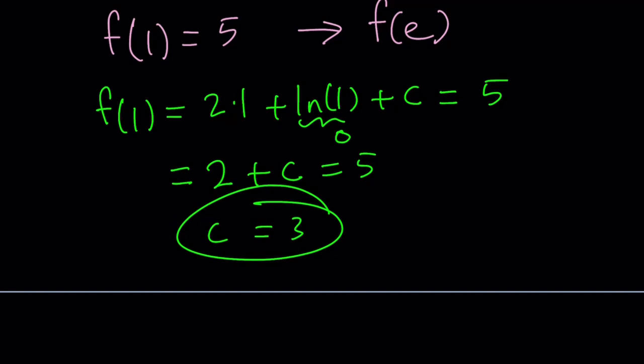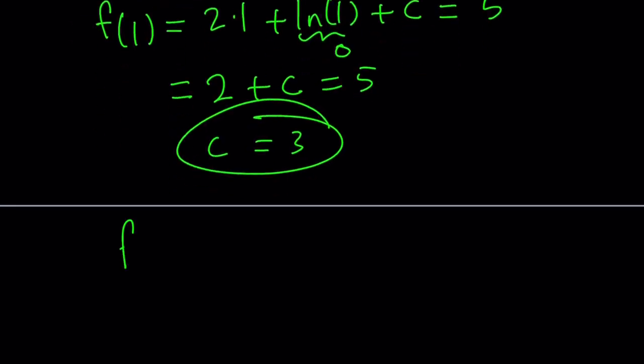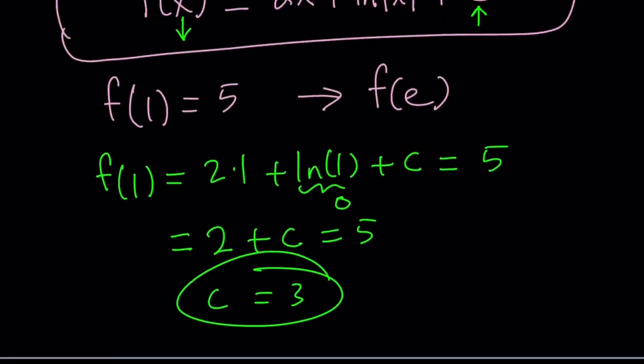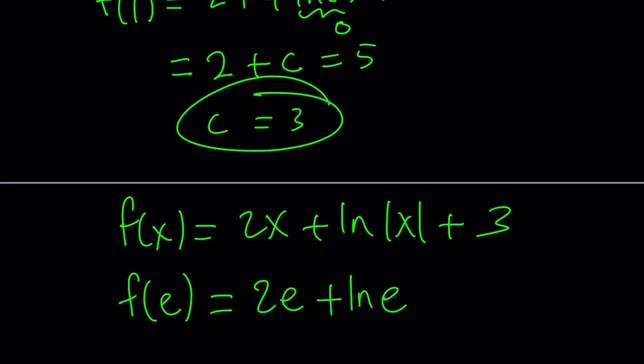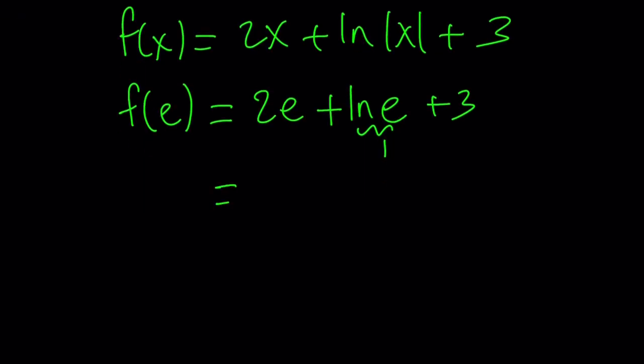Now we got the value of c, which we can plug in to write f of x. f of x can be written as 2x plus ln absolute value of x plus 3. We're supposed to find f of e, so replace x with e. 2e plus ln e plus 3. ln e is equal to 1 because it's the natural log base, and we get 2e plus 4 as the answer.